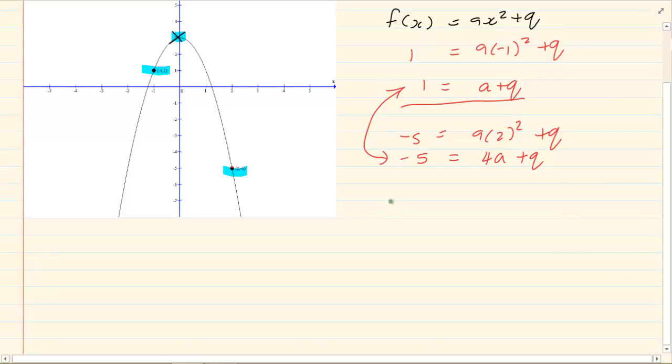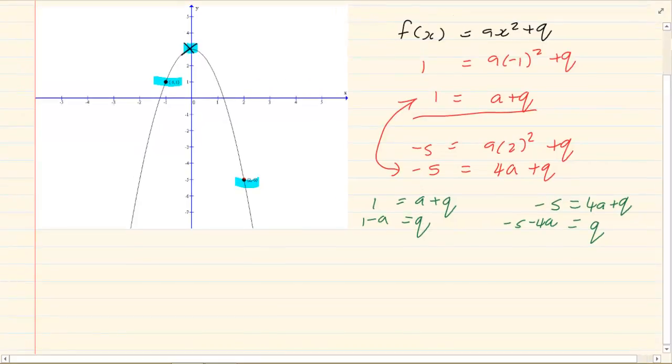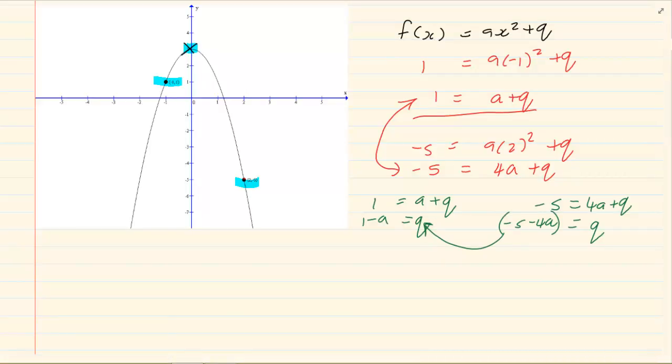If I make q the subject of the first question, so we have 1 is equal to a plus q, and then we have minus 5 is equal to 4a plus q. So we have q is equal to minus 5 minus 4a, and here we have q is equal to 1 minus a. Now we can substitute this chunk into q. It's all under your simultaneous equations, under unknowns, solving for unknowns. It's all under simultaneous equations. So you have to know how to do this. In order to do this level of sum.